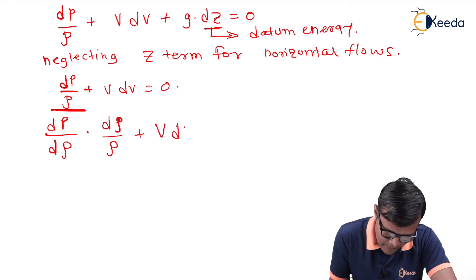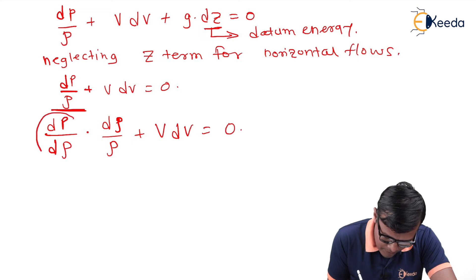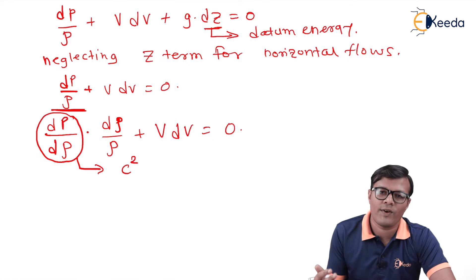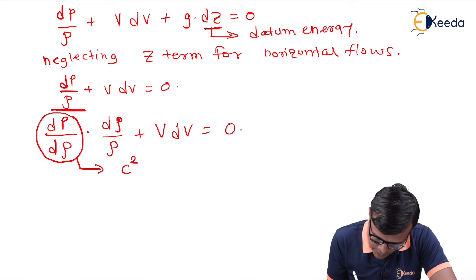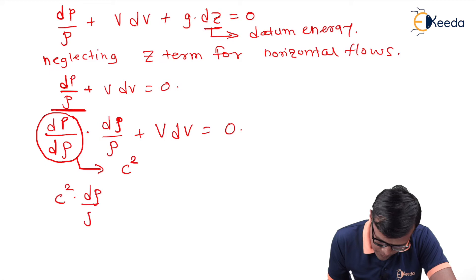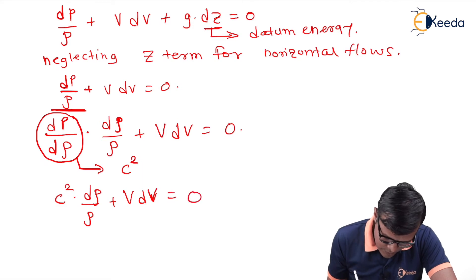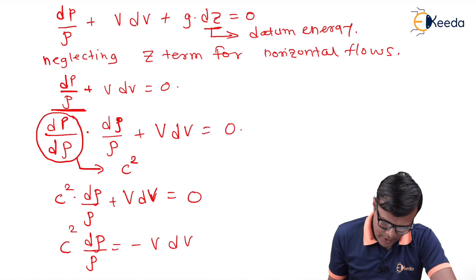The term dp/dρ is nothing but c², where c is the velocity of an elastic wave in the medium. So we have c²·(dρ/ρ) + V·dV = 0, which gives us c²·(dρ/ρ) = −V·dV.